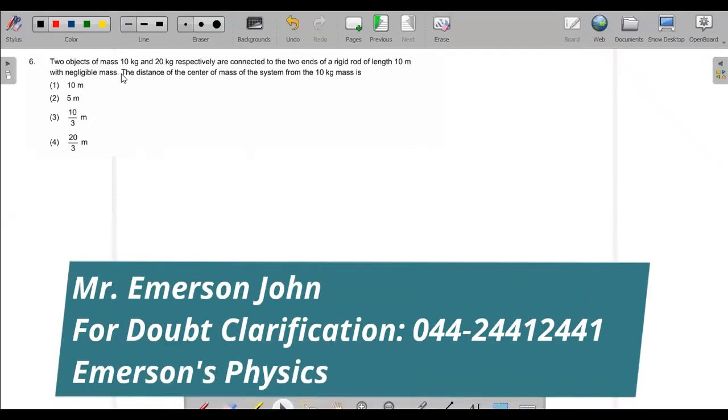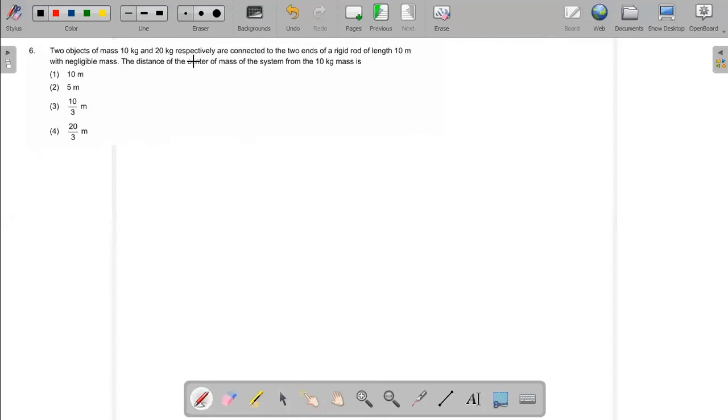The question: two objects of mass, one is 10 kg and another one is 20 kg, are respectively connected to the two ends of a rigid rod. The diagram shows the rod with 10 kg on one end and 20 kg on the other end, connected to the two ends of the rigid rod of length 10 meters total.